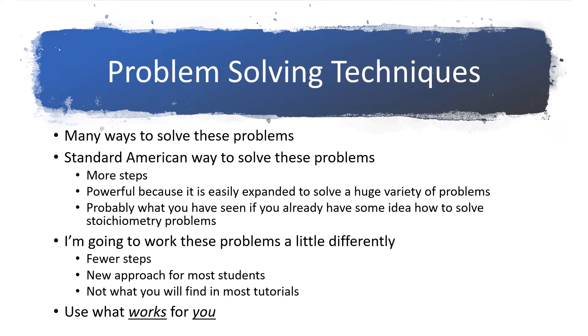So there really are many different ways to solve these problems. Most textbooks that you find in the United States solve these problems in a very specific way that uses dimensional analysis and it takes small steps and links these small steps together. It's an extremely powerful technique because you can easily expand it to solve a huge variety of stoichiometry problems. And this technique is what you've probably seen if you already have in mind some idea about how to solve stoichiometry problems. Well, I'm going to work things just a little bit differently and my approach to this is going to have fewer steps. And so this may be new for most students. And honestly, it's not what you're going to find in most tutorials like if you go out and watch YouTube videos and that sort of thing. But I think you're going to find if you stick with me through this, it's a pretty straightforward way of working these problems. Now the bottom line is you need to do what works best for you.